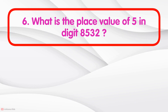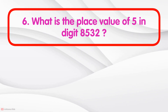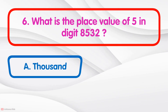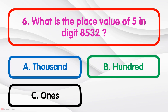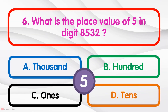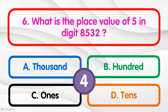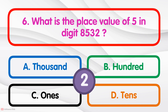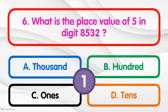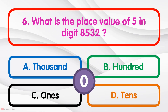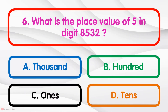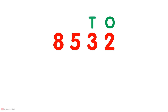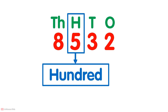What is the place value of five in the digit 8532? Ones, tens, hundreds, thousands — five is in the hundreds place.